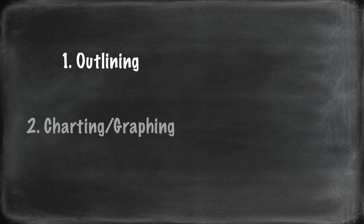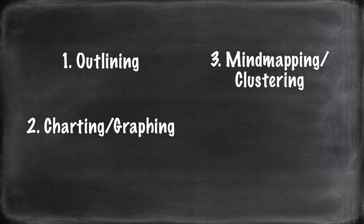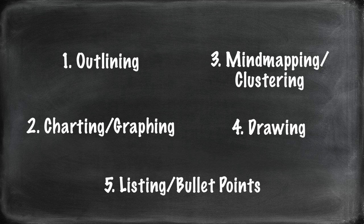There are a lot of different ways you can show pre-writing — what works for me might not work for you. Some other methods writers might enjoy are outlining, charting or graphing, mind mapping and clustering, drawing, or listing and showing bullet points. You don't need to show many different forms of pre-writing — just choose one and find what works for you.